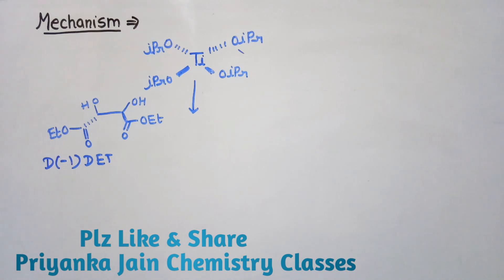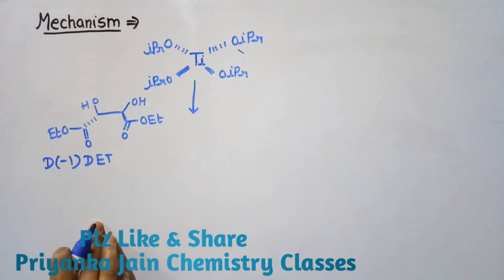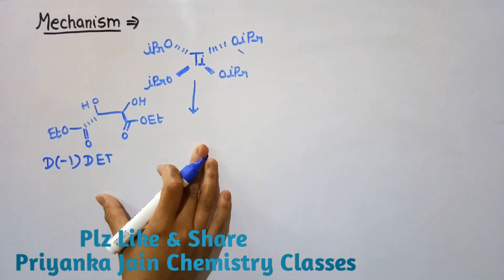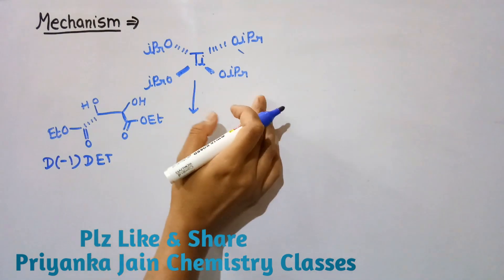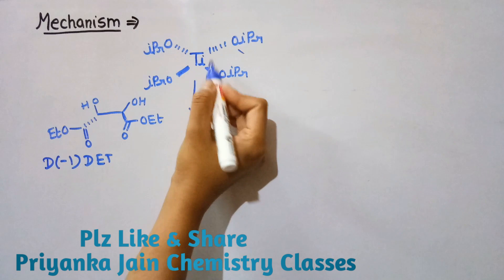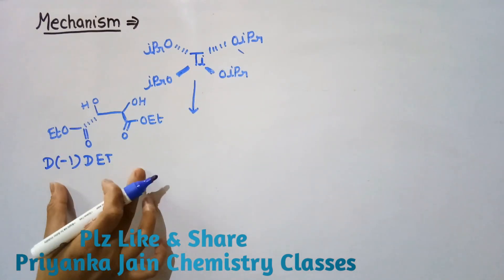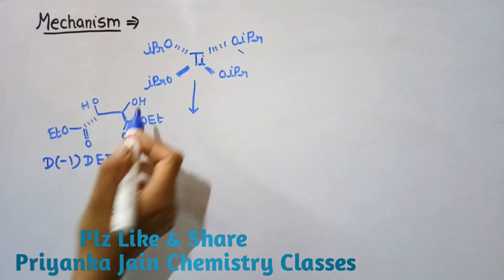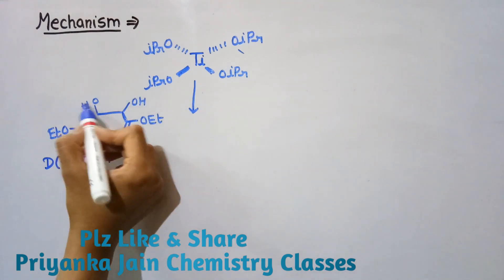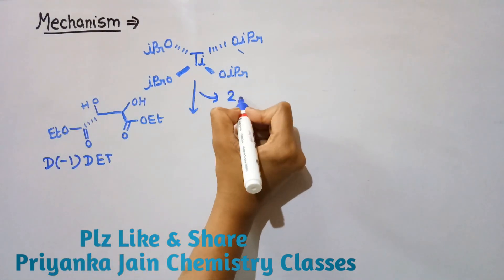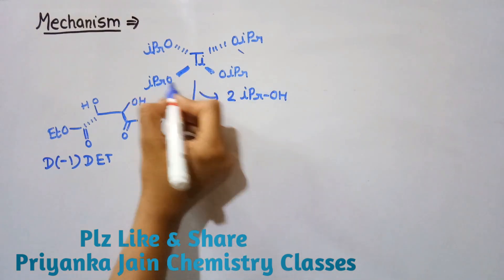Now let's see the mechanism. It is somewhat complicated. If you are preparing for GATE and NET exams, you do not require this mechanism, but for other exams you can study it. Titanium tetra-isopropoxide is tetra-coordinated, and this is (−) diethyl tartrate. Two isopropyl groups react with the OH groups of diethyl tartrate.